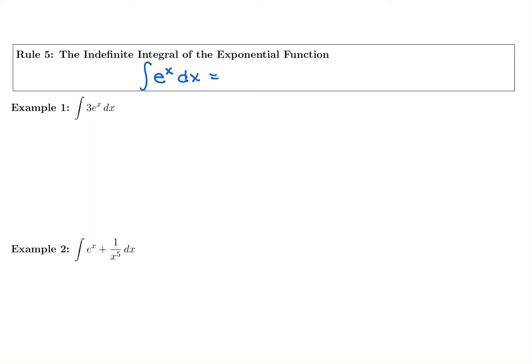So if we want to take the integral of e to the x, we want to think about what had a derivative of e to the x. What has the derivative of e to the x is e to the x plus C. The derivative of e to the x is e to the x, and the derivative of C is 0, so we get back to what was in the integrand. So the antiderivative of e to the x is e to the x plus C.